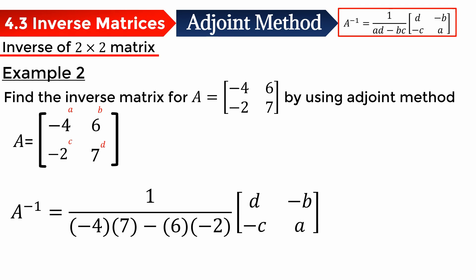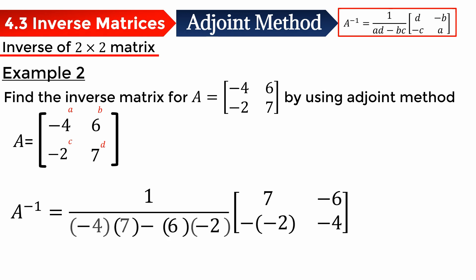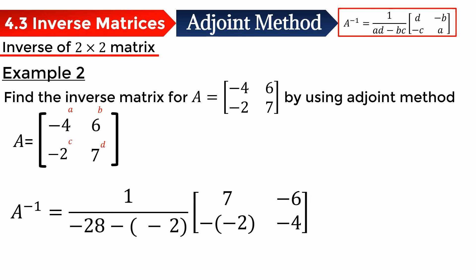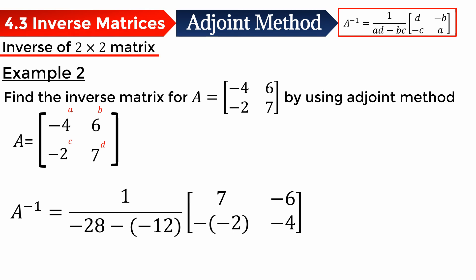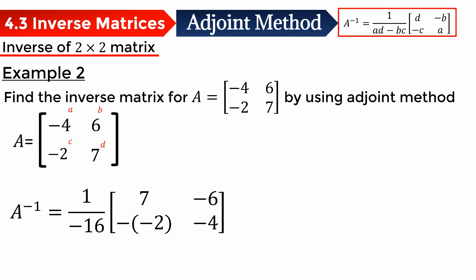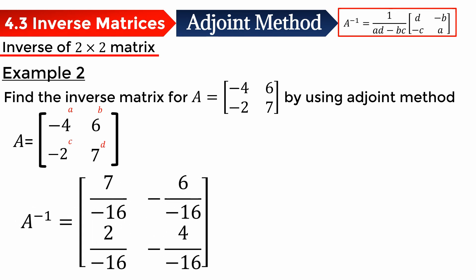For elements A and D, we switch places: 7 and negative 4 switch places. For B and C, we change the signs, so B becomes negative 6, and C becomes negative of negative 2. So negative 4 times 7 is negative 28, and 6 times negative 2 is negative 12. Negative of negative 12 is positive 12, so negative 28 plus 12 is negative 16. Remember to multiply each element by 1 over negative 16, then simplify.